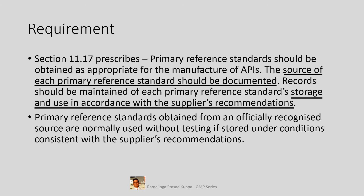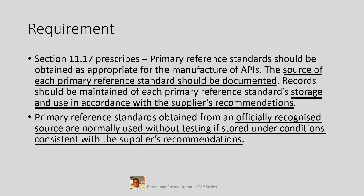Primary reference standards obtained from an officially recognized source are normally used without testing if stored under conditions consistent with the supplier's recommendations. The official standards are already qualified at source, hence it is not required to test them once again. They are well elucidated for chemical structure, impurities, and purity established fully at the source. However, those sources may not provide such data for our records — it will be archived at the source site. The Certificate of Analysis gives only information on potency or levels of impurities. It is also important that they are stored as recommended to avoid any deterioration.